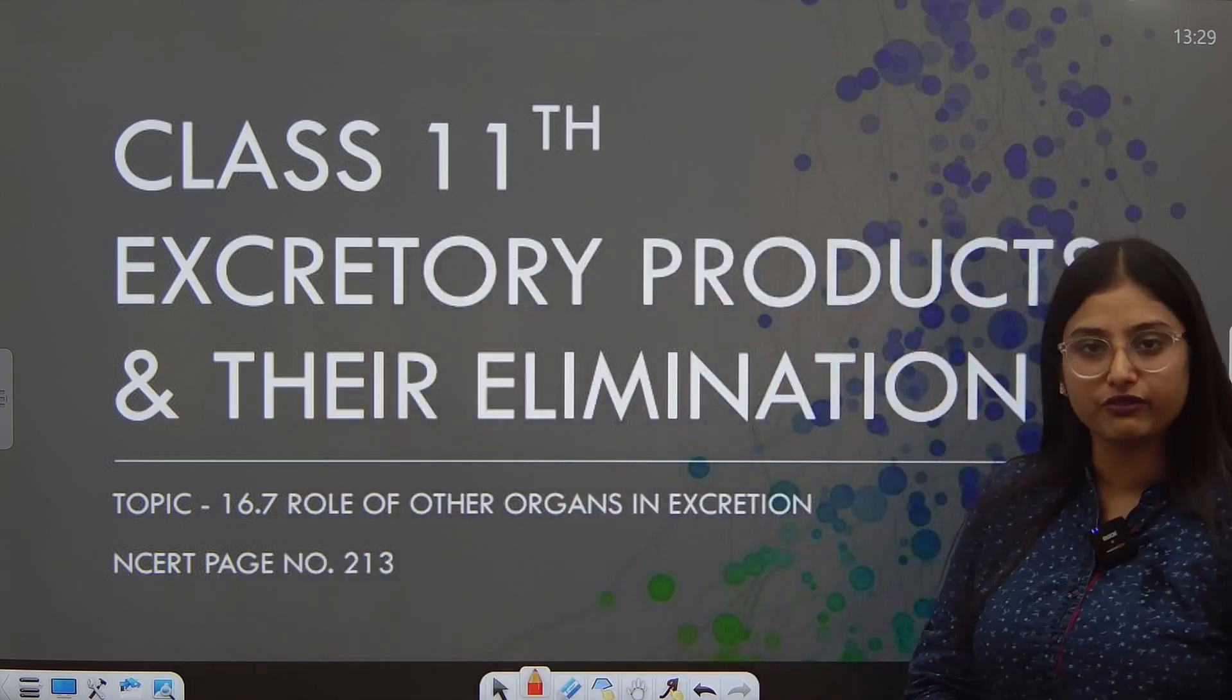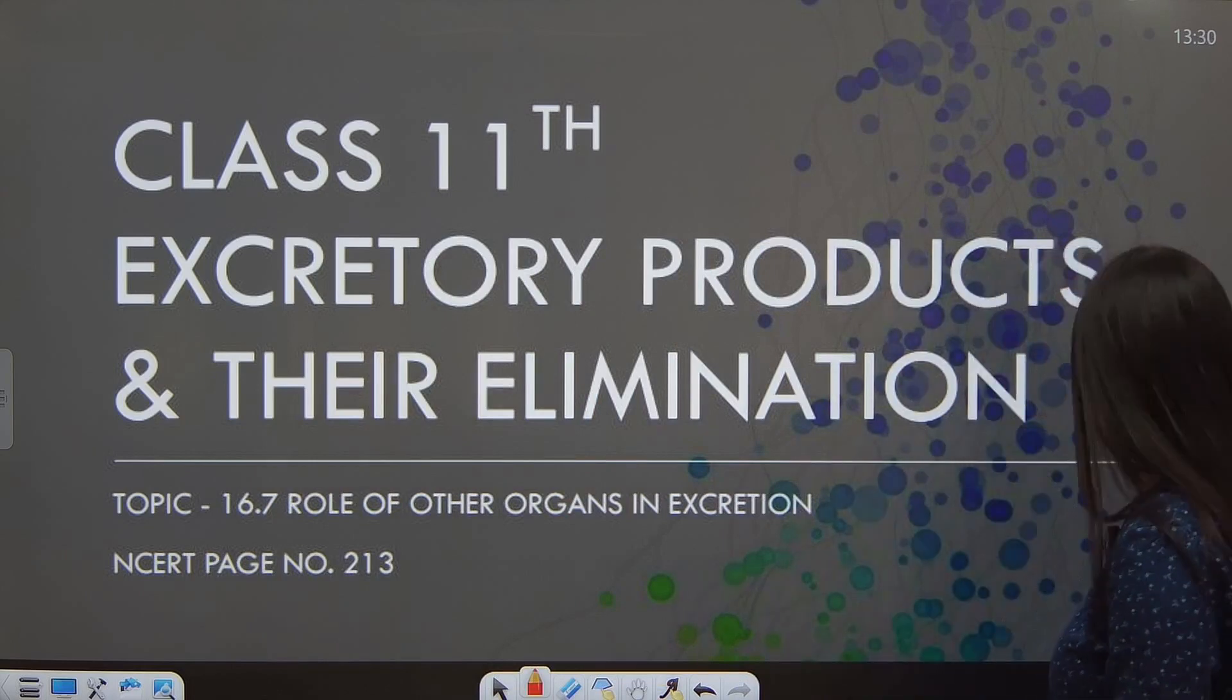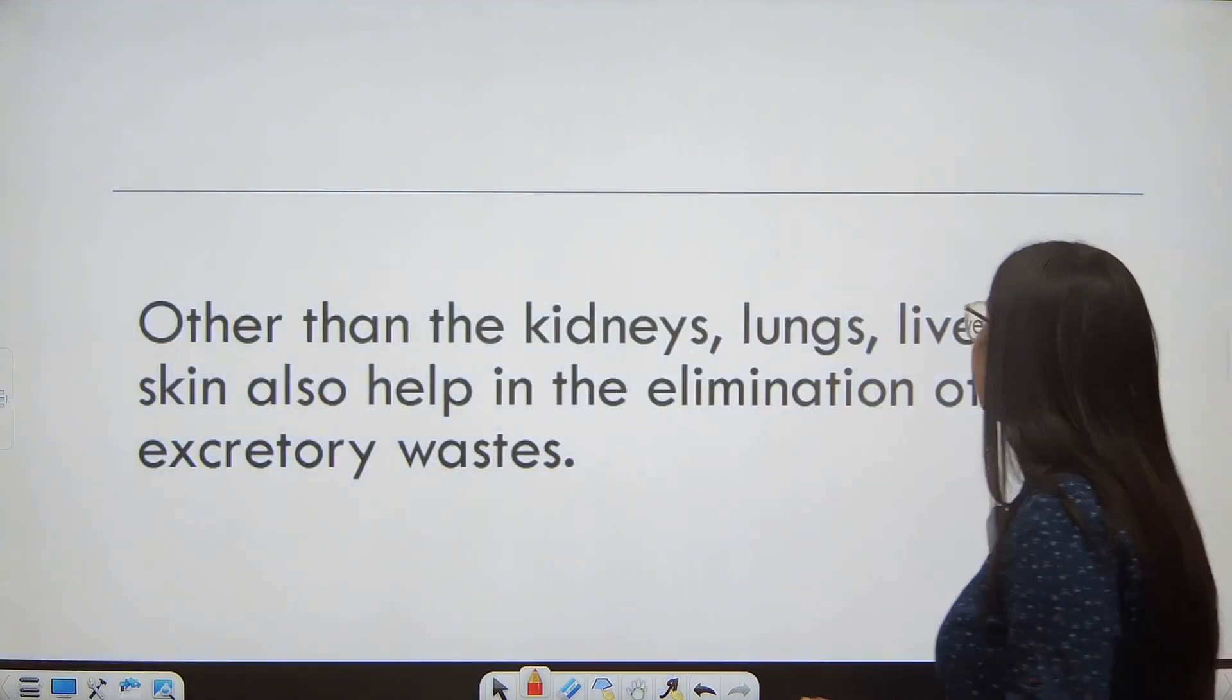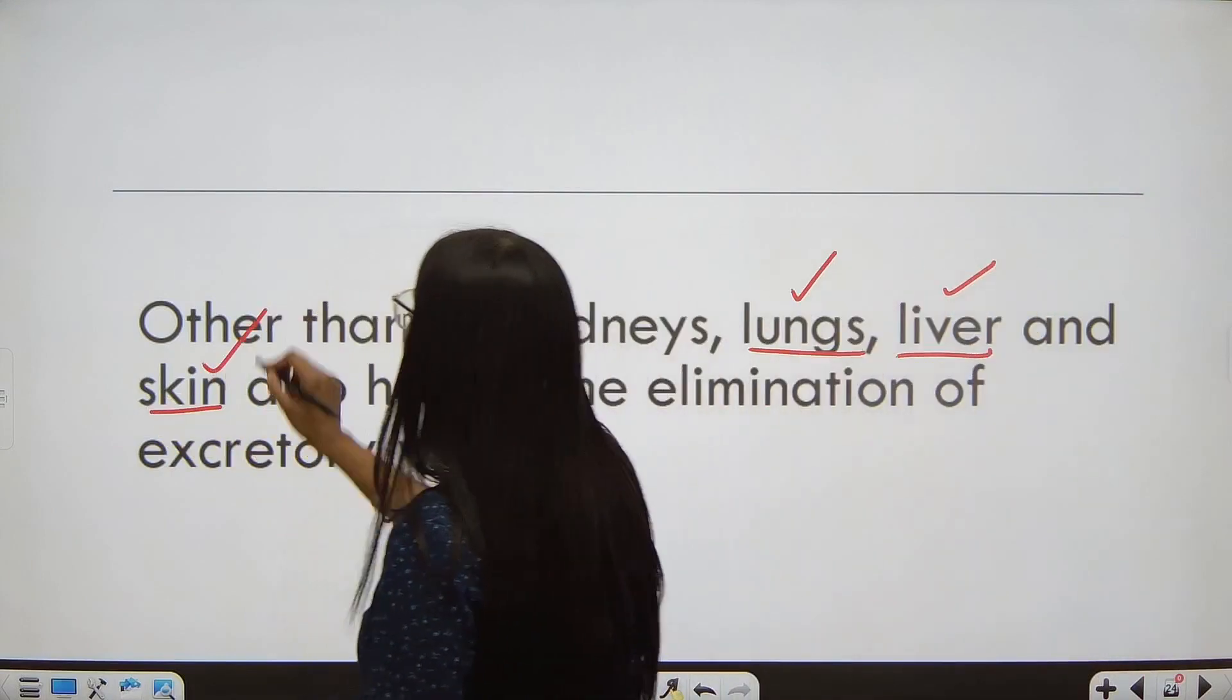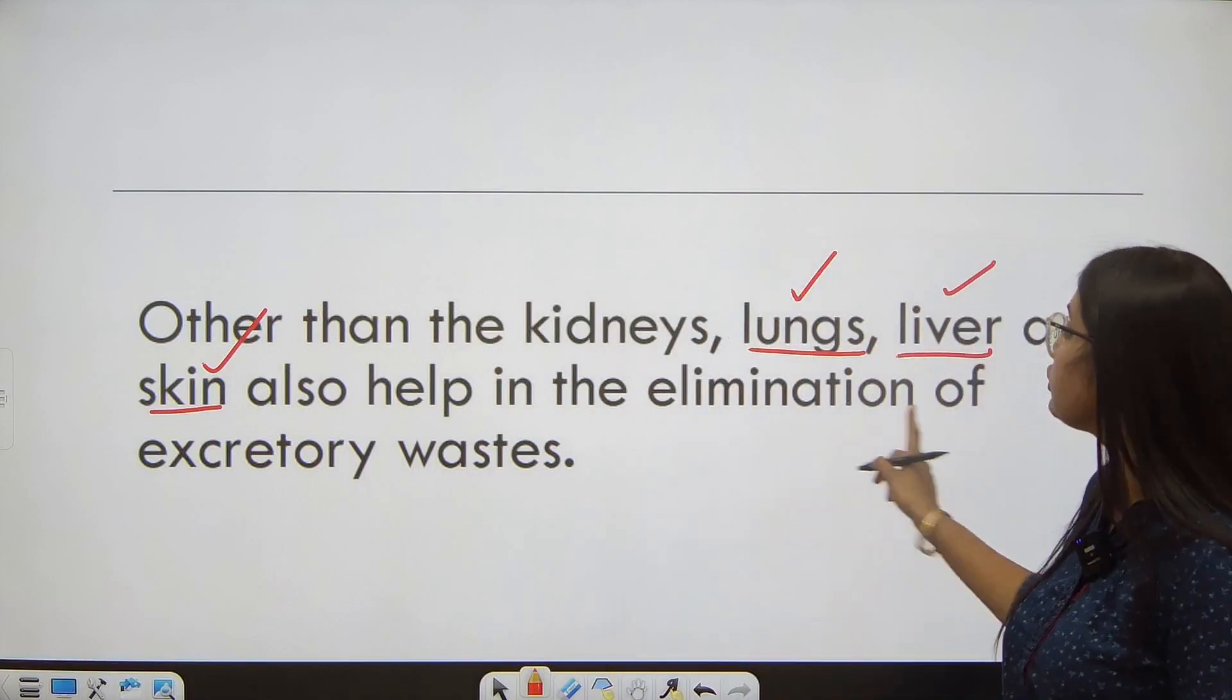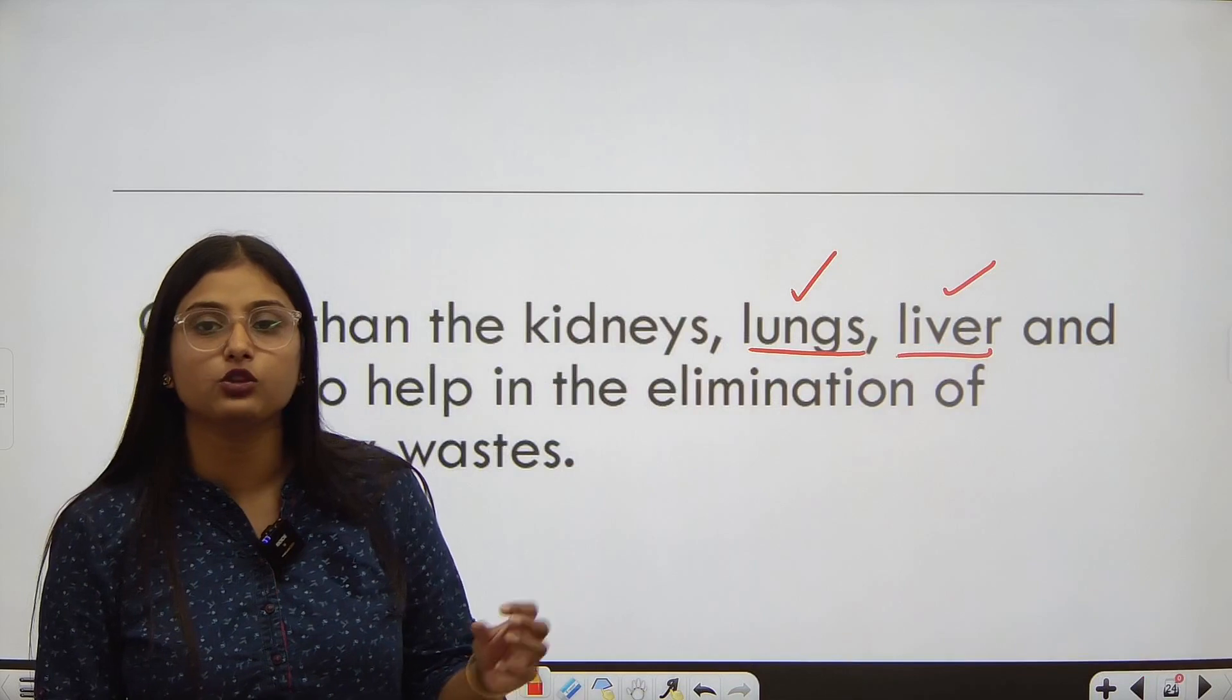You can refer to your NCERT page 213. There is mention of the role of other organs. Let's discuss. Other than kidneys, the organs are lungs, liver, and skin. These three organs also help in the elimination of excretory waste.